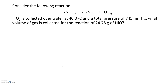The problem reads: consider the following reaction — 2 nickel(II) oxide decomposes to nickel as a solid in elemental form and oxygen gas. So we know right off the bat that there is a gas being produced in this decomposition reaction. If the O2 is collected over water at 40 degrees Celsius and a total pressure of 745 mmHg, what volume of gas is collected for the reaction of 24.78 grams of nickel(II) oxide?